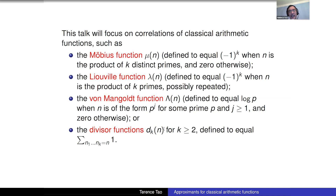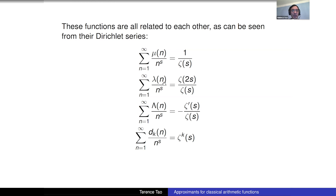These are very classical functions; they're all related to each other. One way to see that is by looking at the Dirichlet series. Standard computations show that all their Dirichlet series are various functions of the Riemann zeta function, which is a big clue that they're all connected, and there are many classical identities relating them.